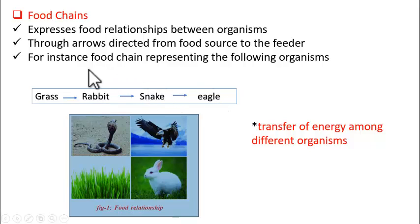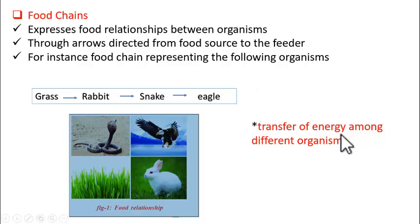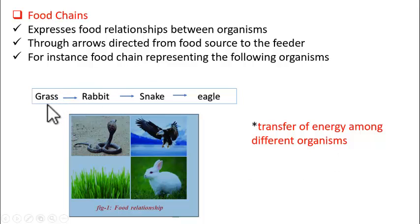This is what is called a food chain, and what do food chains represent? Food chains represent the transfer of energy among different organisms. If you take this food chain, the energy is transferred from grass to rabbit, rabbit to snake, and then snake to eagle.